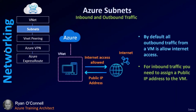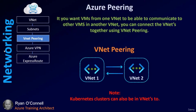Inbound and outbound traffic: by default, all outbound traffic from a VM is allowed to the internet. For inbound traffic, you need a public IP address assigned to that VM. If we're talking about VNets, we also need to talk about VNet peering. If you want VMs from one VNet to communicate with other VNets on your Azure network, you can connect them using VNet peering.